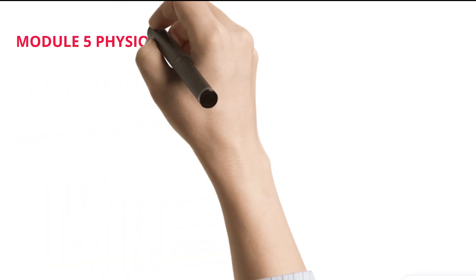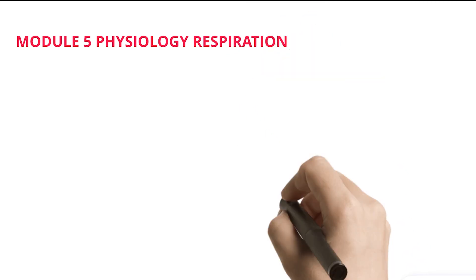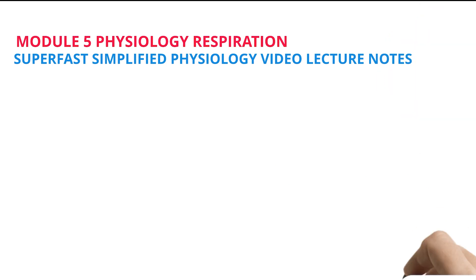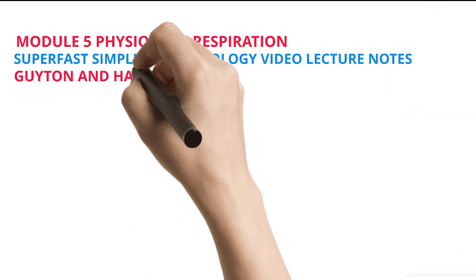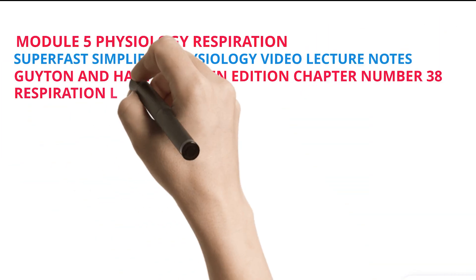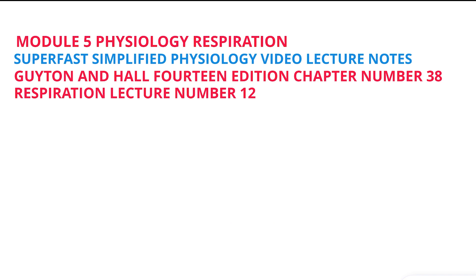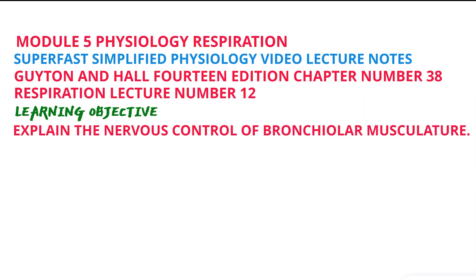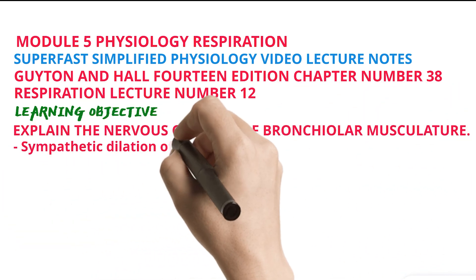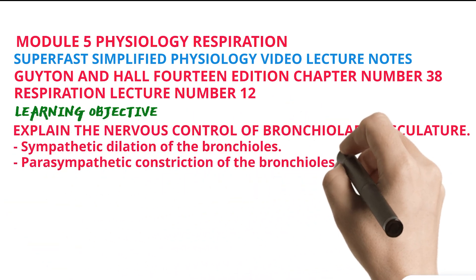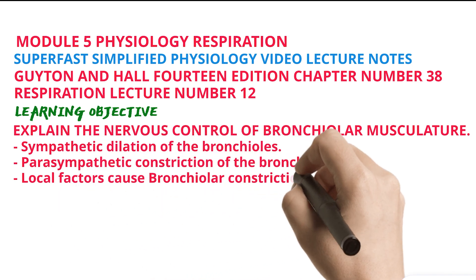Module 5 Physiology Respiration — Superfast Simplified Physiology Video Lecture Notes. Guyton & Hall 14th Edition, Chapter 38, Respiration, Lecture Number 12. Learning Objective: Explain the Nervous Control of Bronchiolar Musculature. Topics covered: Sympathetic Dilation of the Bronchioles, Parasympathetic Constriction of the Bronchioles, and Local Factors that Cause Bronchiolar Constriction.